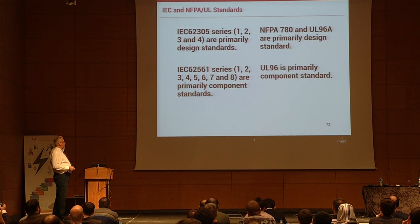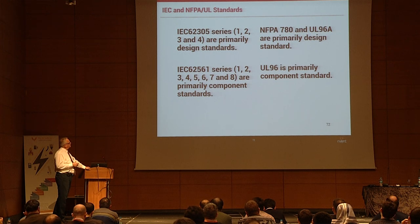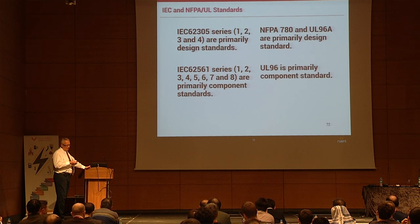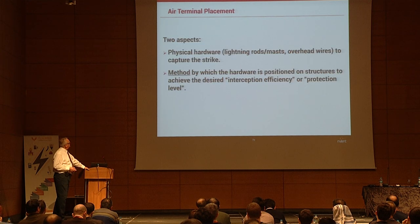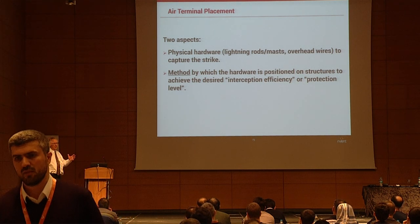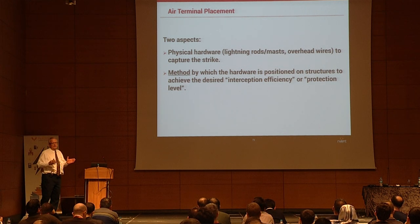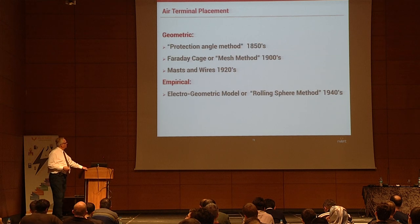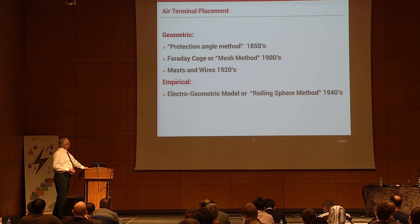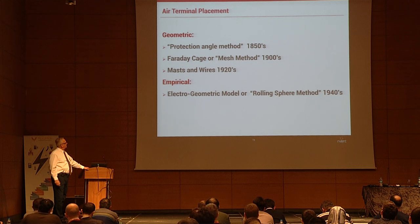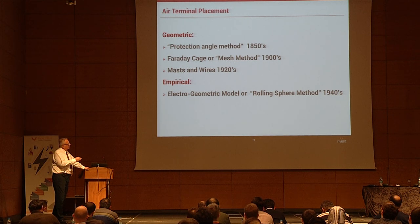Comparing IEC and American standards: NFPA 780 is the most popular method in the US and it matches the IEC standard. Lightning protection has two aspects — physical hardware (terminals, wires) and the method for placing terminals on the structure to get proper protection. Protection angle method was invented in 1850, mesh method in the 1900s, mast and catenary wires in the 1920s, and the electrogeometric rolling sphere model in the 1940s.